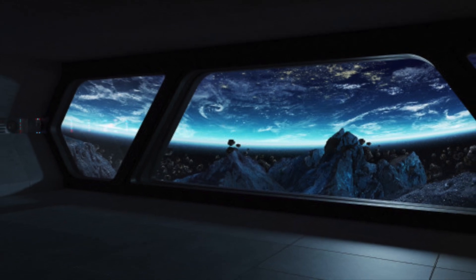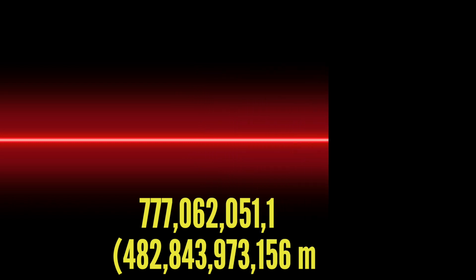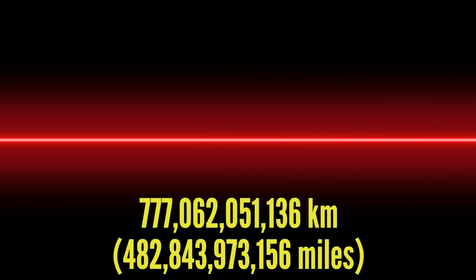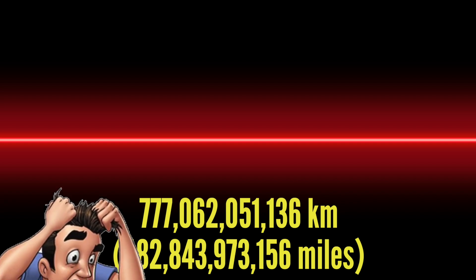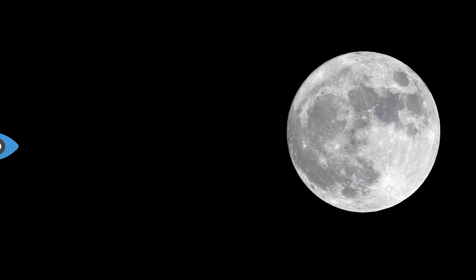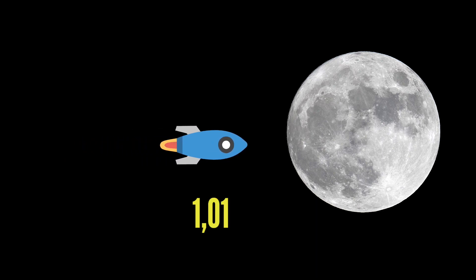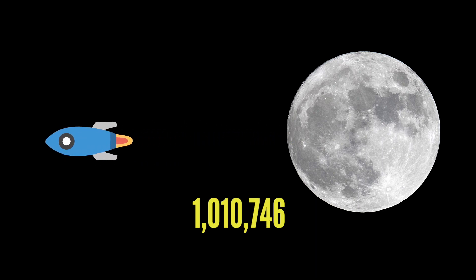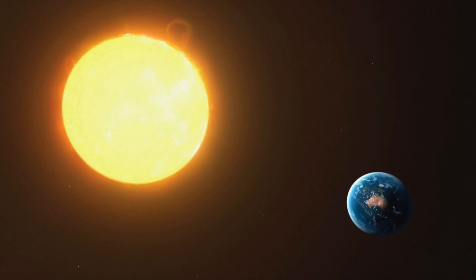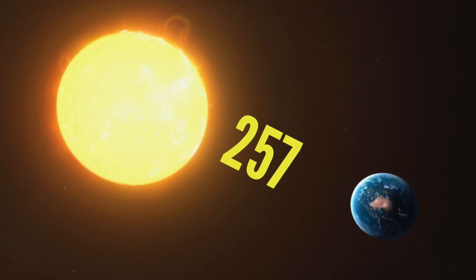Let's carry on this light year journey and move on to a light month. A light month is 777,062,051,136 km. I can barely wrap my head around that number, never mind the sheer distance. That is the equivalent of going to the moon and back 1,010,746 times. It's also like going to the sun and back 2,574 times.